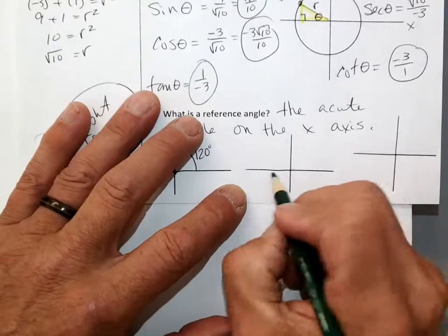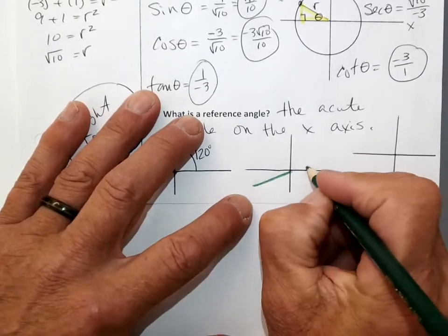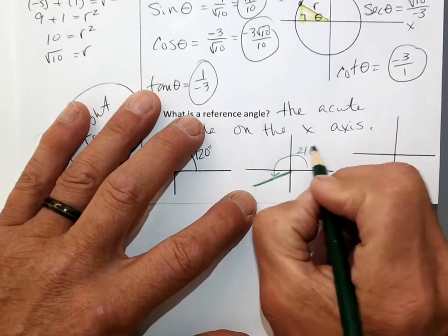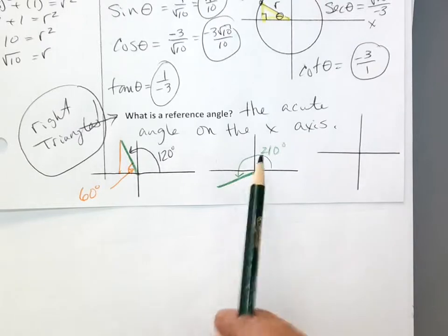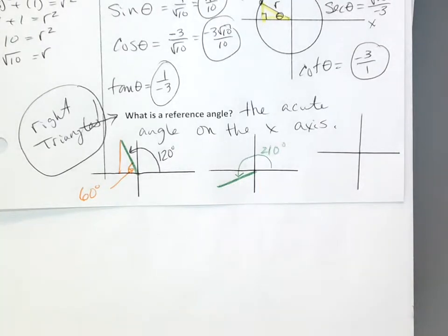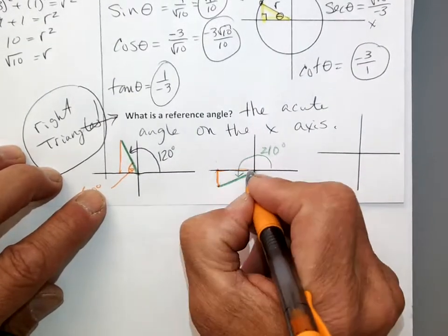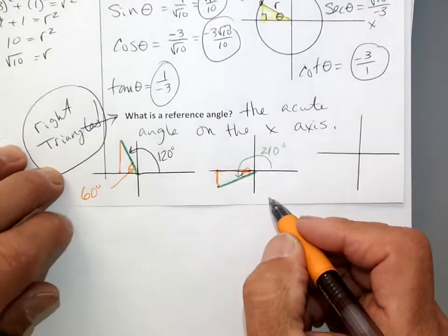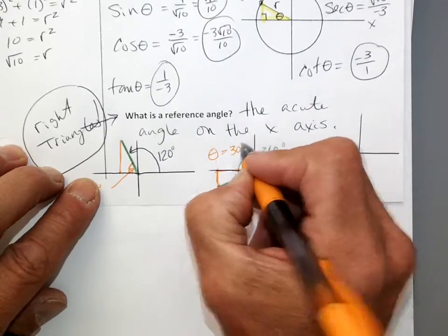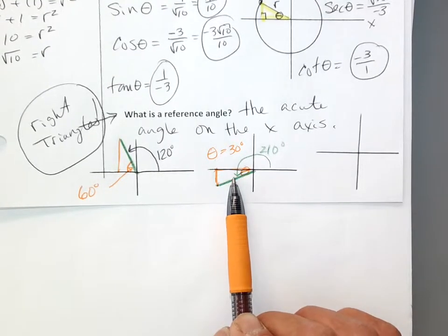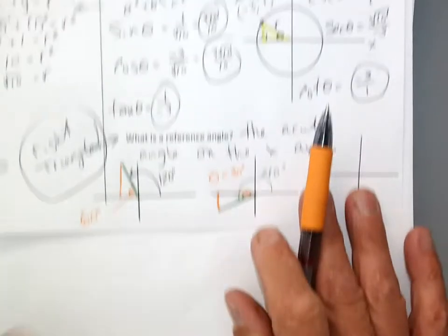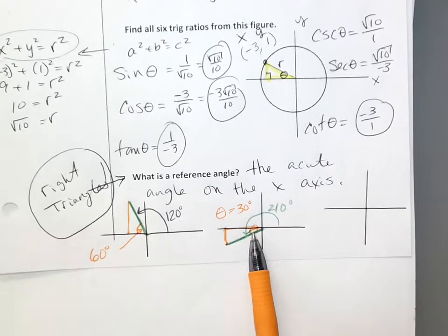Let me draw another example. If this angle is 210 degrees — there's no way that's a right triangle because 180 degrees is already a straight line. But I can make a little triangle right here. So my reference angle is that acute angle — 30 degrees. See my reference angle of 30 degrees? 210 is 180 plus 30 more, so the reference angle is 30. It is the acute angle on the x-axis — acute means less than 90 degrees.